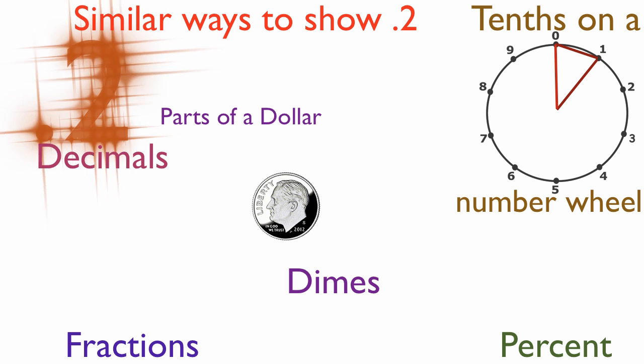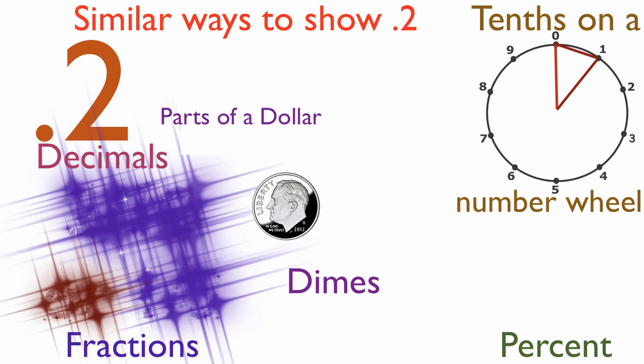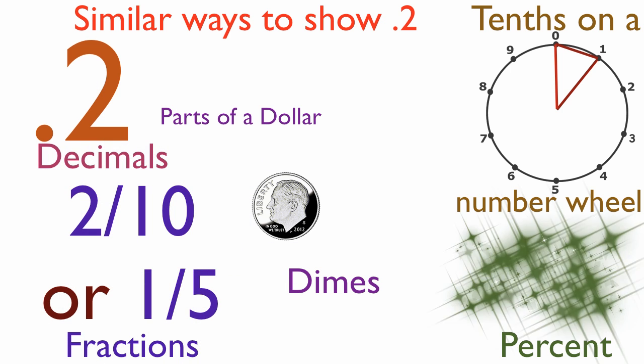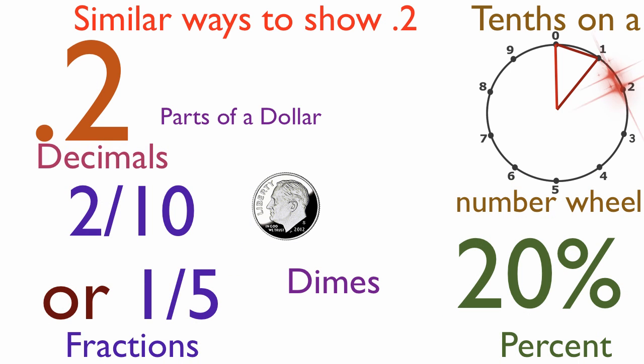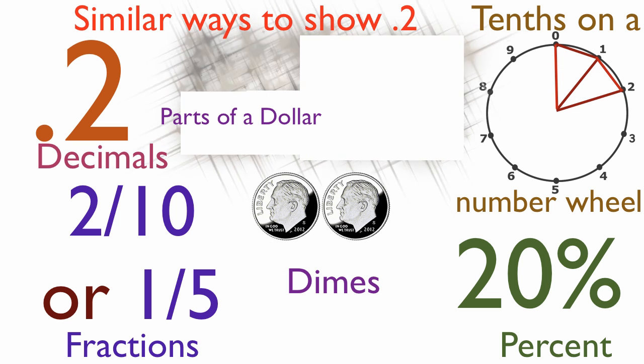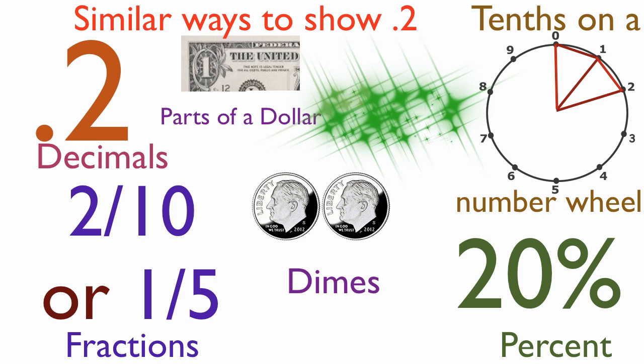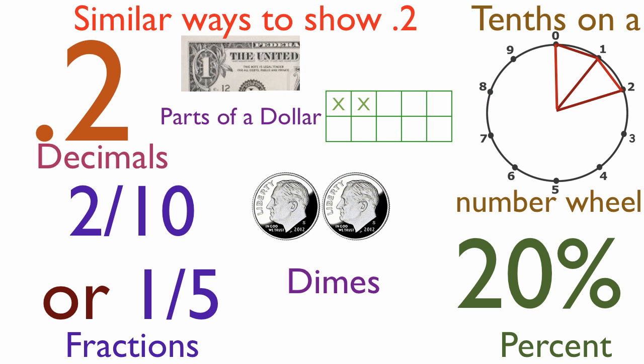Chris has gone two-tenths, 0.2, or one-fifth, or 20% of a mile, or to two on the number wheel, and he now has two dimes, which is two-tenths or 20% of a dollar. These are all different words for the same thing, and if you understand one of these, you can help figure out what the rest mean.